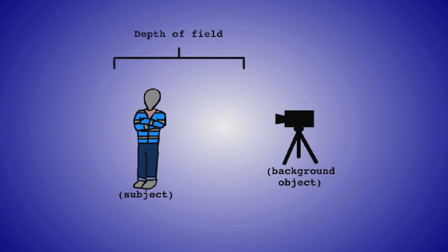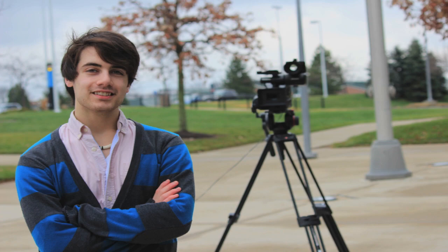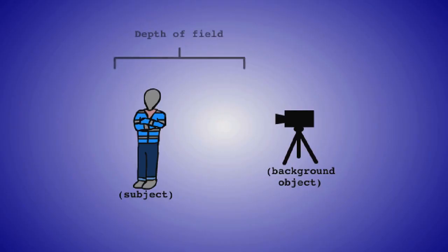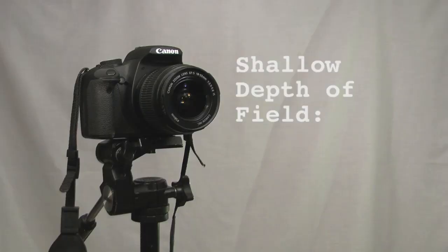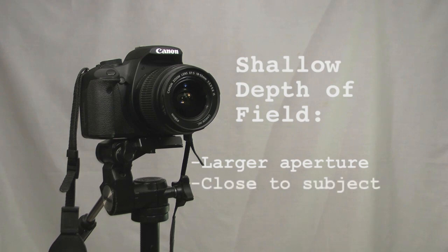Our final topic today is depth of field. When you take a photo, you want your subject to be in focus. The depth of field is the range on your photo's z-axis in which everything is in focus. If your subject is up close and focused, everything in his or her immediate area will look sharp, and everything behind him or her will look blurry. The larger your aperture, or the lower your f-stop, the shallower your depth of field will look. The closer your focusing distance, the shallower your depth of field will look. The longer your lens's focal length, the shallower your depth of field will look.